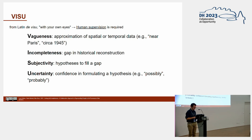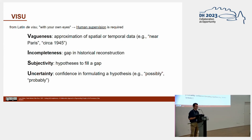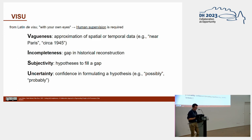The four issues are: vagueness — the approximation of spatial and temporal information with expressions such as 'near Paris' or 'circa 1945'; incompleteness — indicating gaps in the historical reconstruction, any lack of information that was lost; subjectivity — the formulation of hypotheses to fill gaps using historical sources, so the historical context in hypothesis-making; and finally uncertainty — the degree of confidence in formulating hypotheses. To address this, in addition to developing specific functionalities, in the Prova interface we implemented data modeling strategies such as publishing linked open data provenance as a nanopublication.